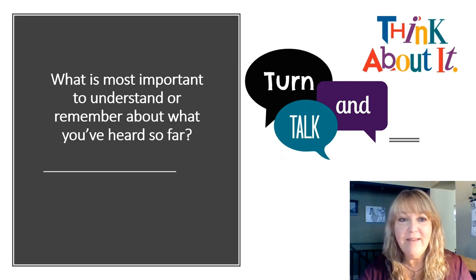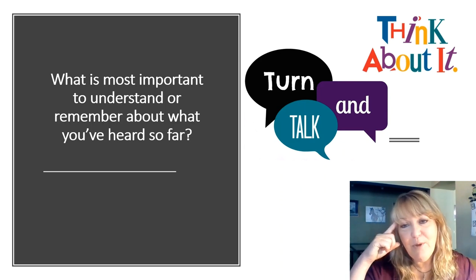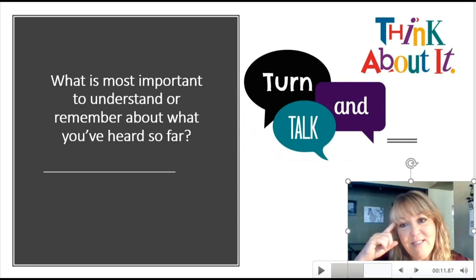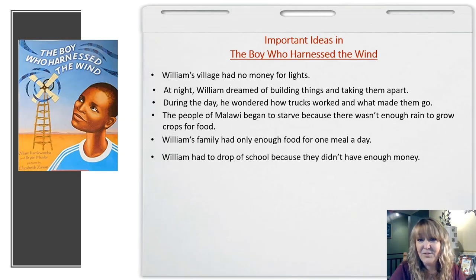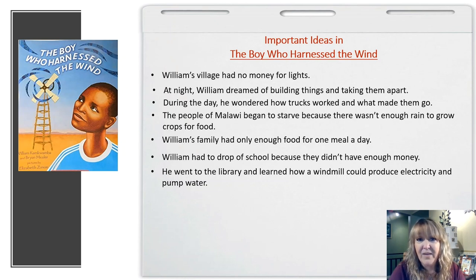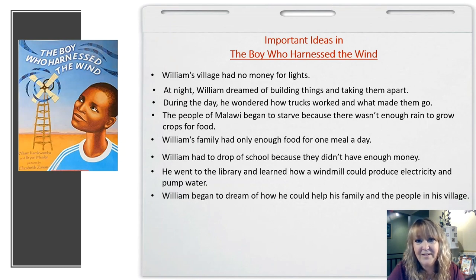It's time for us to pause again and think about what is the most important part to understand or remember about the section that we just heard. Just take a moment to think, and then go ahead and share your thoughts with your partner. Maybe you talked about the fact that William went to a library he remembered, and that with the help of a dictionary, he was able to read and understand about how a windmill could produce electricity and pump water. And he began thinking and dreaming about how that might be used to help not only his family, but also the people in his village. Let's keep reading.